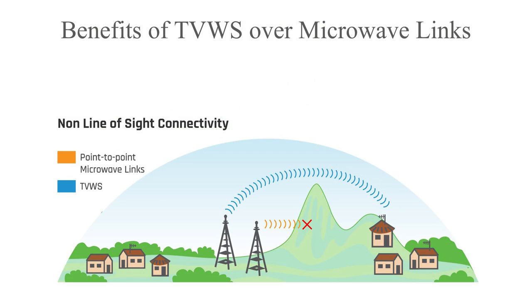Comparing TV white space with microwave links as possible solutions, TV white space fares better. Given the same tower height, TV white space can cover longer distances than a microwave link. Non-line-of-sight connectivity is another advantage — thanks to its excellent propagation characteristics, TV white space can transmit over small hills and through foliage, whereas point-to-point microwave links require strict line of sight.